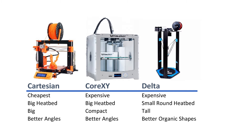It really depends on what type of print you're going to do, and how much space you have. If you're limited on budget, just get a Cartesian style 3D printer. If you have the budget and want the best print quality for organic shapes, go with the Delta. For other types of prints, it depends on your budget, but you'll be happy with a Core XY or a Cartesian style 3D printer — just do your research and try to get the best 3D printer for your budget.